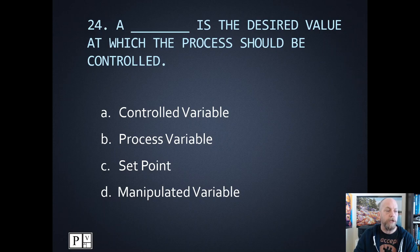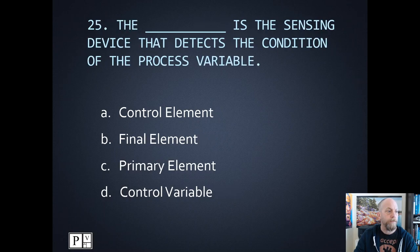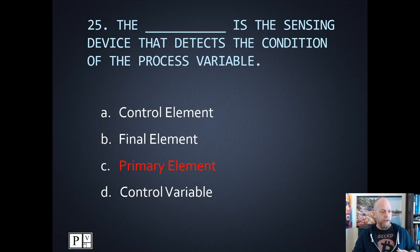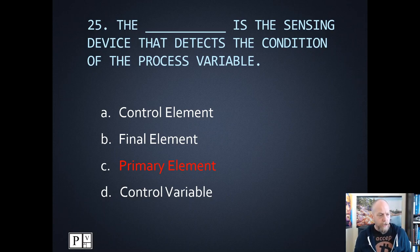Number twenty-four: which one is the desired value which the process should be controlled? The desired value is going to be the set point — that's ultimately where we want the system to be. Number twenty-five: which one is the sensing device that detects the condition of the process variable? The sensing device is the sensor, also known as the primary element. Sarah was apparently screaming the answer — the sensor is going to be the primary element.